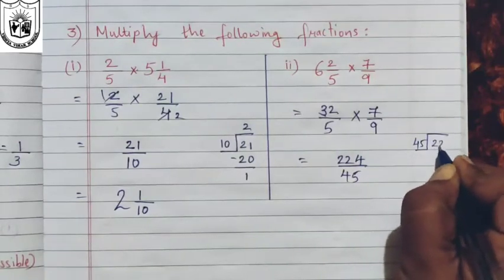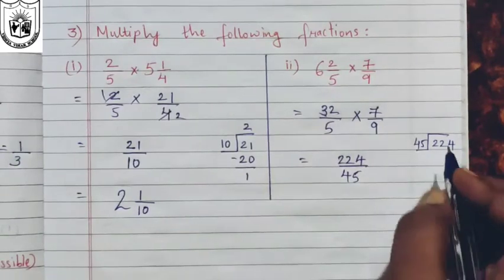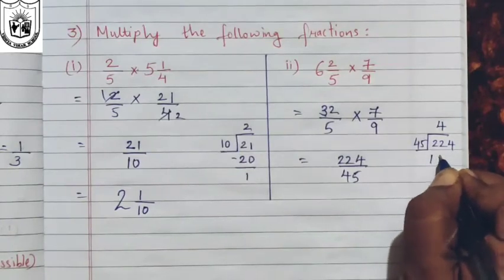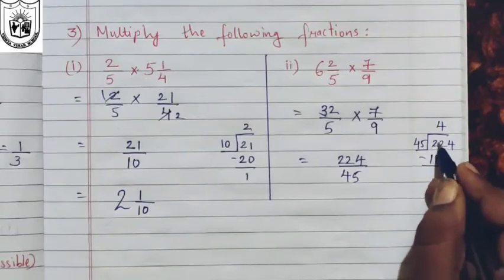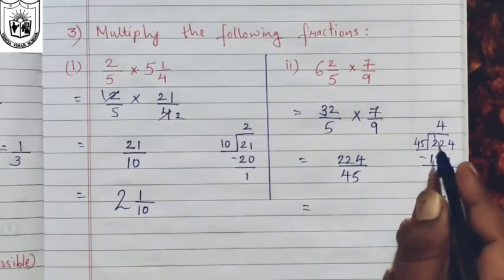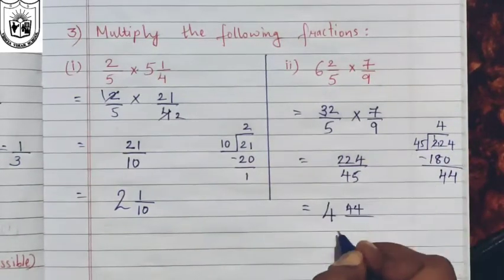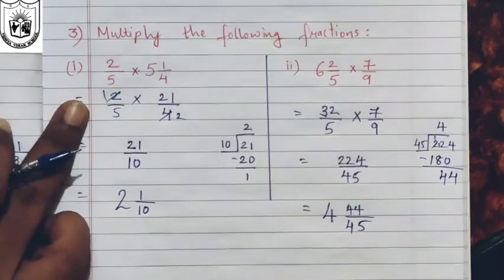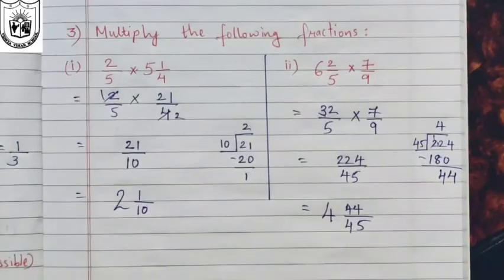So we will have to convert this improper fraction. Doing the division in rough work: forty-five times four are one hundred and eighty. Subtract from two hundred and twenty-four, and you have forty-four remaining. So four will be your whole number, forty-four will become the numerator, and forty-five will become the denominator. Under the third question I have solved the first two; there are five more problems you will have to solve for homework.